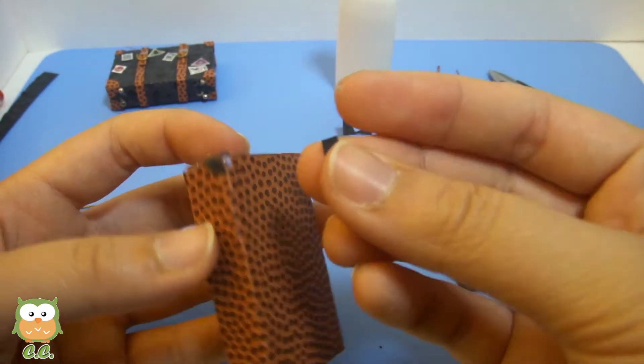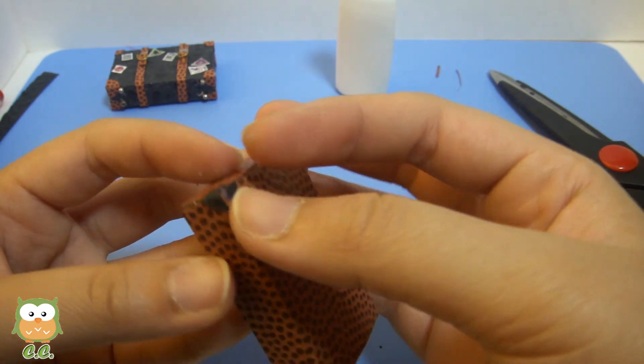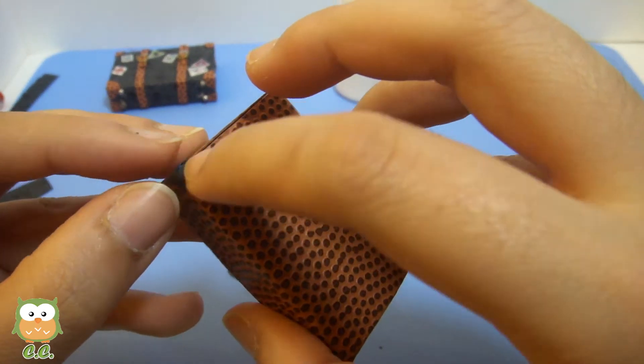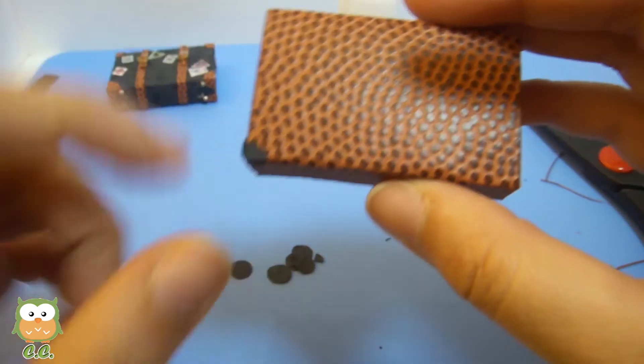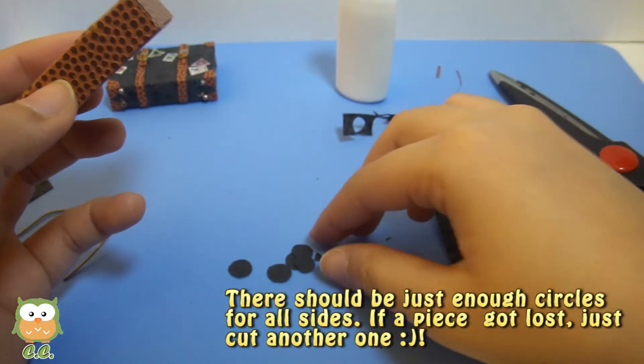Add the one-fourth piece onto here like this. So it looks like it's wrapping around the corner. Do that for all the sides.